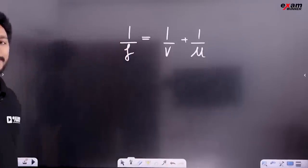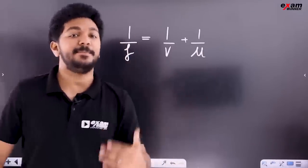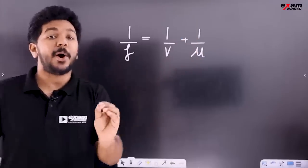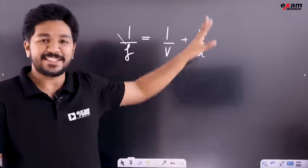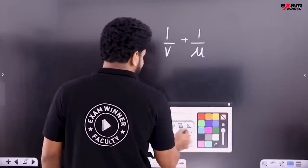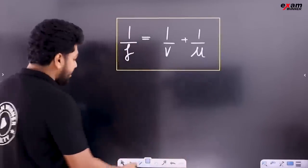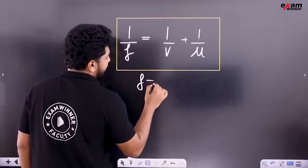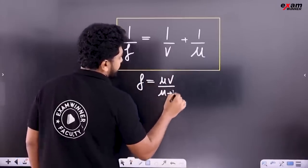If you have the mirror equation, you can derive a very simple sum. You can put this in the focal length formula: F is equal to uv divided by u plus v.